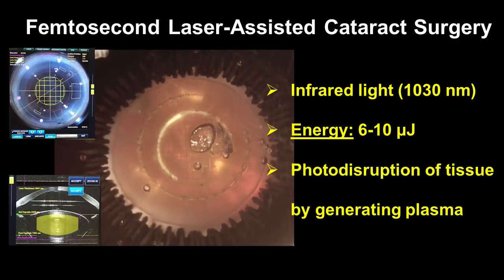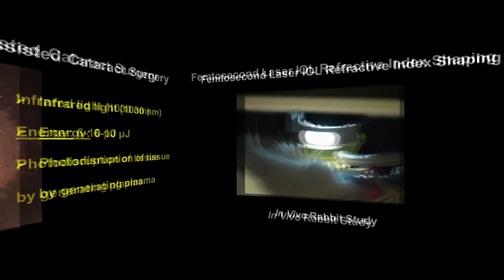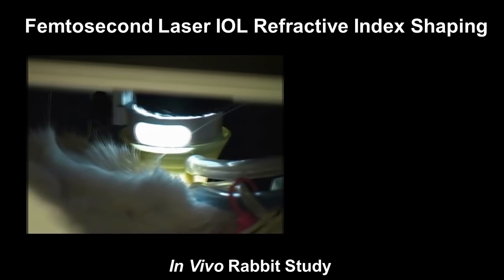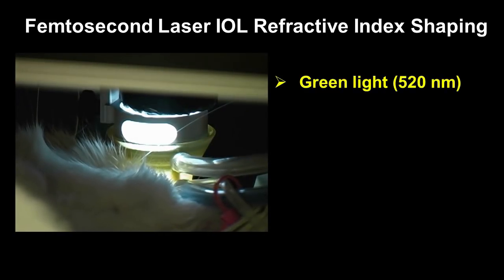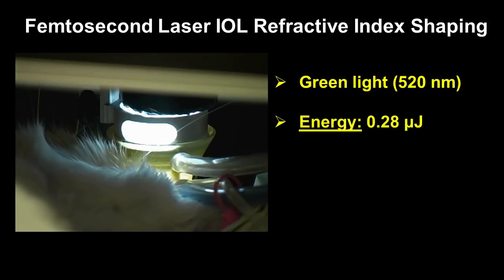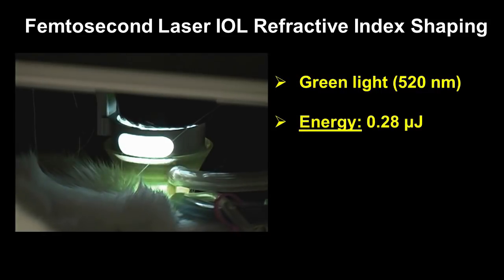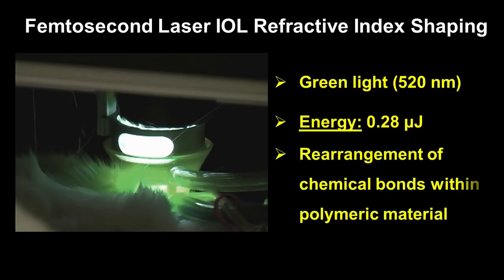In femtosecond laser IOL refractive index shaping, the system uses green light. The average energy level is very low, 0.28 microjoules, with little variation according to the IOL material. There is no cut or ablation, just a laser-induced chemical reaction.